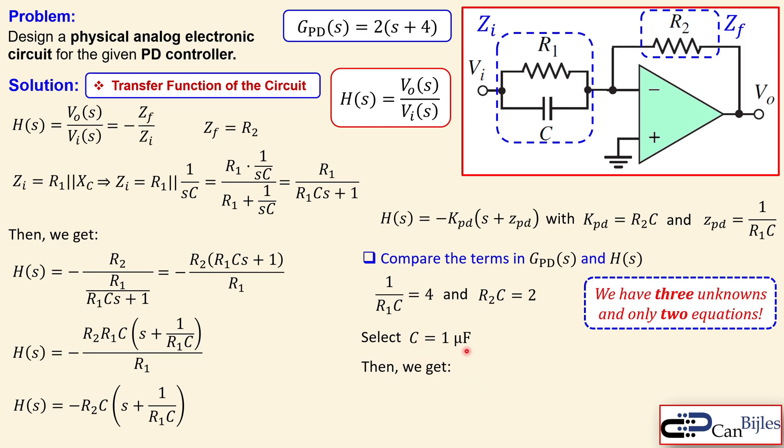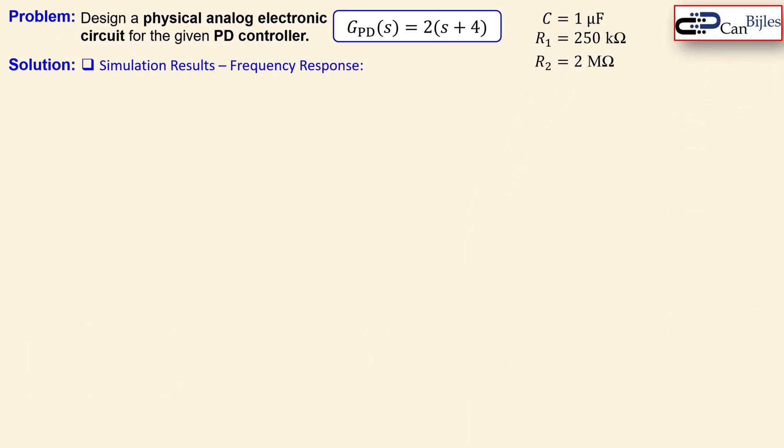For example if you do this capacitor of 1 microfarad and we can now use this formula, we can say R1 is then equal to 1 over 4C and that will give us 250 kilo ohms. So you can also now calculate the value of R2 using this formula. R2 times C will be 2. So that means R2 is then 2 over C. So you can just substitute the value we have chosen for the capacitor and you will get 2 mega ohms. So we have now the selected capacitor values and also the R1 and R2 we have calculated here. So let's bring them here together.